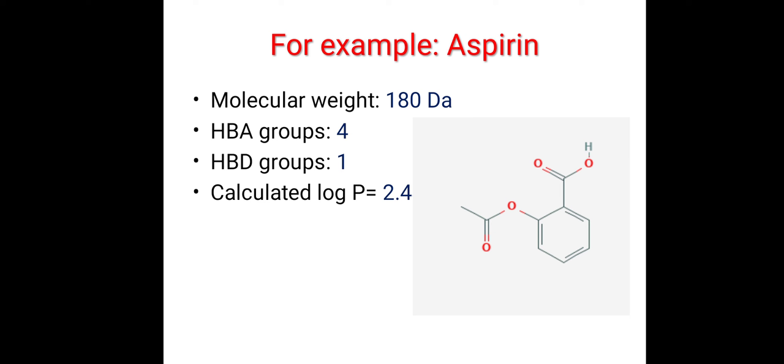Then, hydrogen bond acceptor groups are 4. See, here one oxygen, second oxygen, third oxygen and fourth oxygen. So hydrogen bond acceptor groups are 4 which are less than 10.